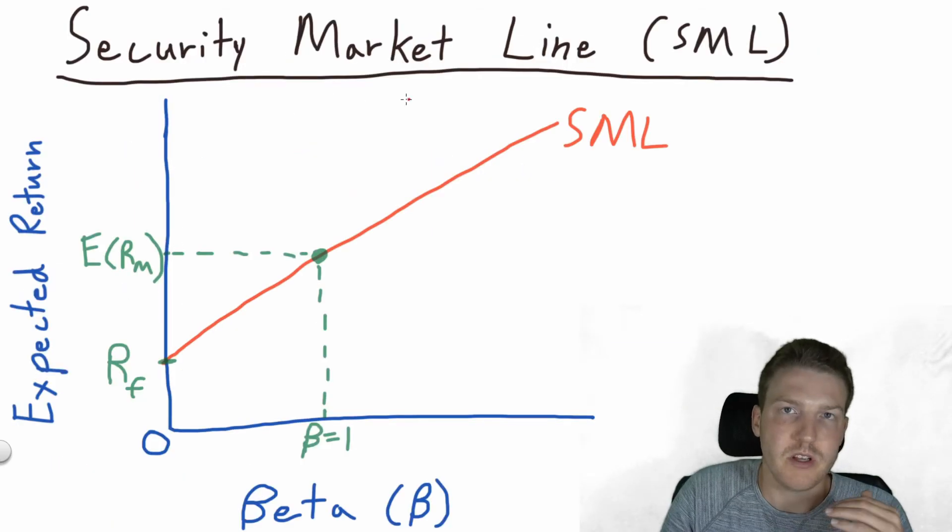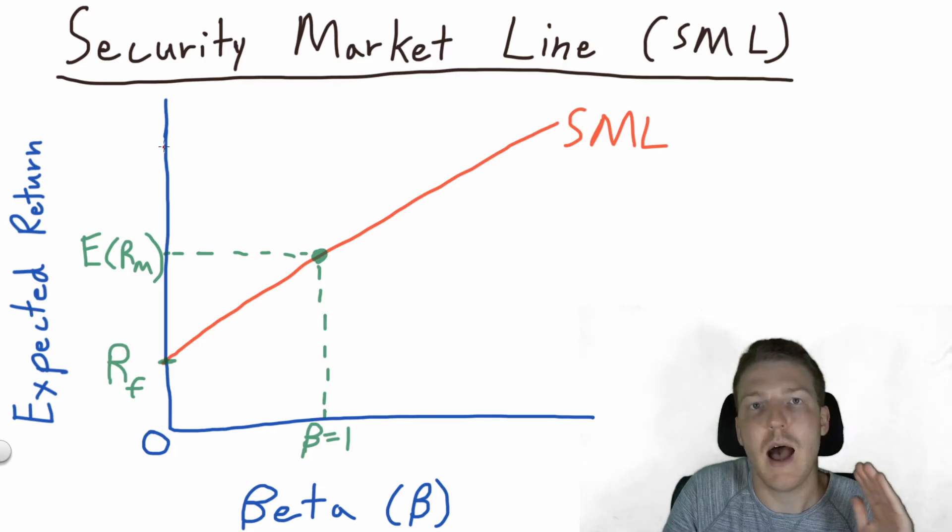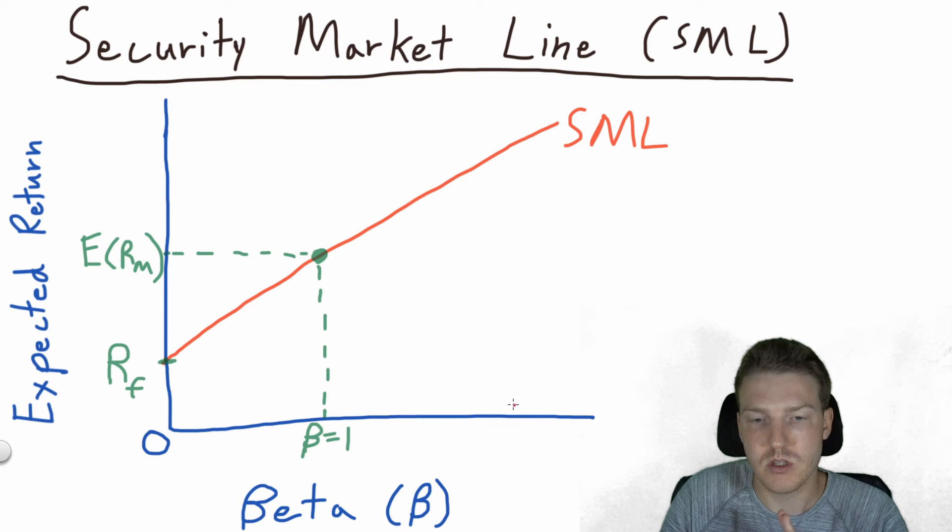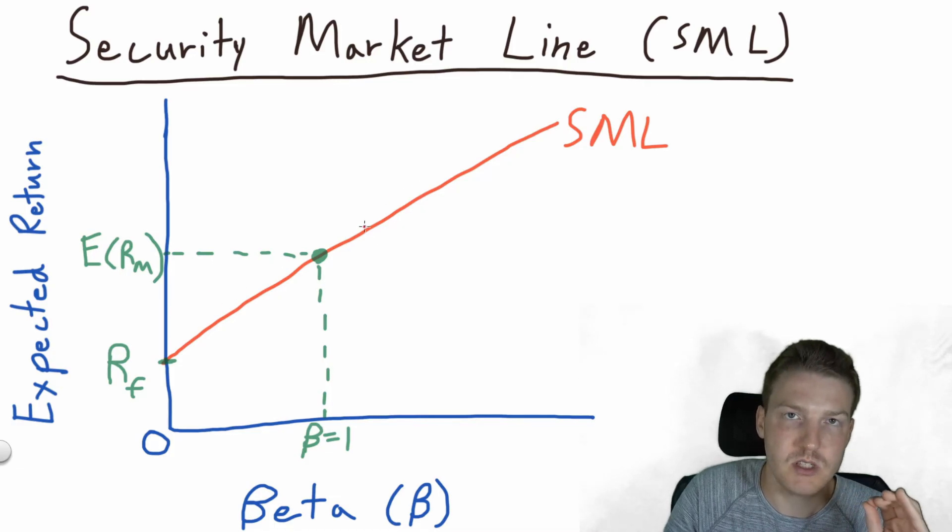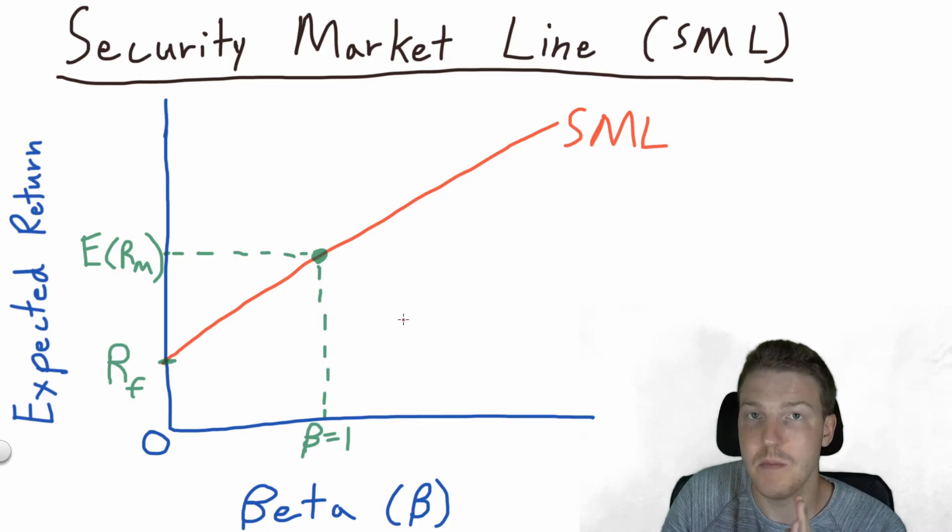The security market line is the visual depiction of the CAPM model. So here we have a graph with on the vertical axis we have expected return. So as we increase along the vertical axis we get a higher expected return. On the horizontal axis we have beta. So as we move from left to right on the horizontal axis we see an increase in beta. So the security market line plots the expected return that we should receive for a given level of systematic risk, which is beta.